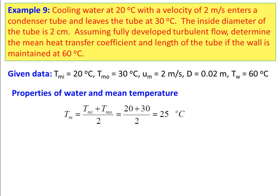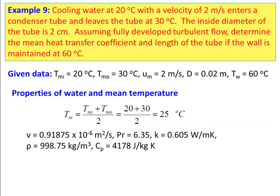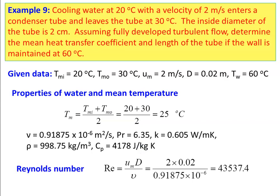Properties of water at mean temperature: Tm = (20 + 30)/2 = 25°C. Kinematic viscosity = 0.91875 × 10⁻⁶ m²/s, Prandtl number = 6.35, thermal conductivity = 0.605 W/m·K, density = 998.75 kg/m³, specific heat = 4178 J/kg·K. Reynolds number: Re = Um·D/ν = 2 × 0.02 / (0.91875 × 10⁻⁶) = 43537.4. Flow is turbulent.